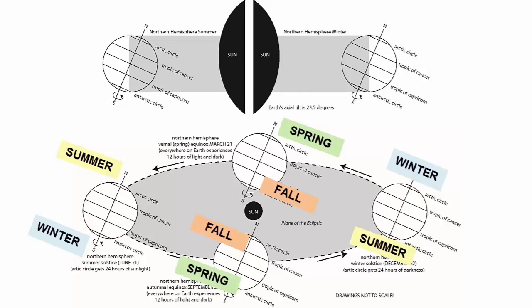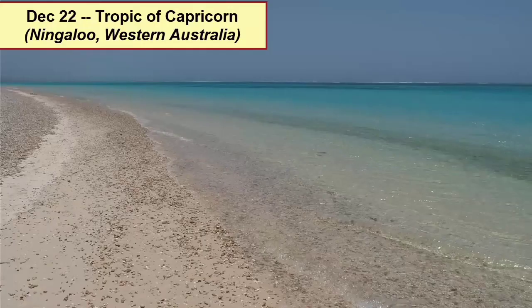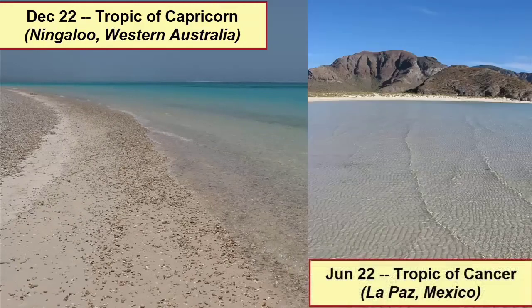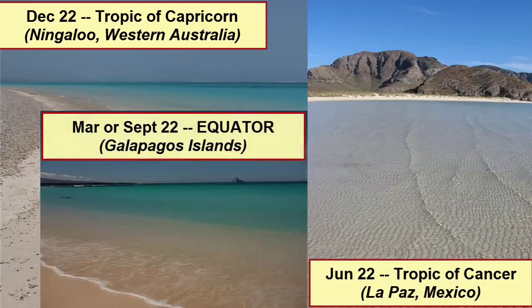That means that sun lovers can plan trips to maximize their sun exposure, traveling to the Southern Hemisphere in December, January, and February, and the Northern Hemisphere during June, July, and August. And if you're looking for the most intense sun on the planet, be sure to travel to the equator at the equinoxes, 23.5 degrees north in June, and 23.5 degrees south in December.